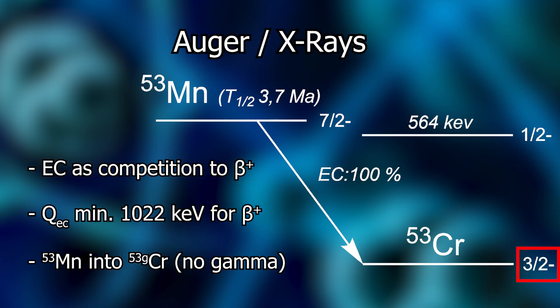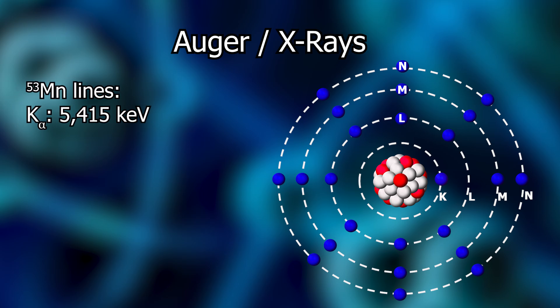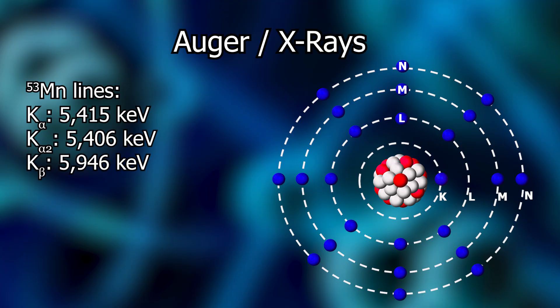But it's still electron capture. And where is the electron captured from? Mostly from the innermost shell, the K shell. Now we have a hole that can be filled by electrons from the L shell. This so-called K-alpha transition — or according to the new IUPAC nomenclature, the K-L transition — results in the emission of 5.415 kiloelectron volt x-ray photons. This can also happen from other energy levels of the L shell, giving K-alpha 2 transitions. The transition from the still higher M shell would be called a K-beta transition, with a higher energy difference of 5.946 kiloelectron volts.